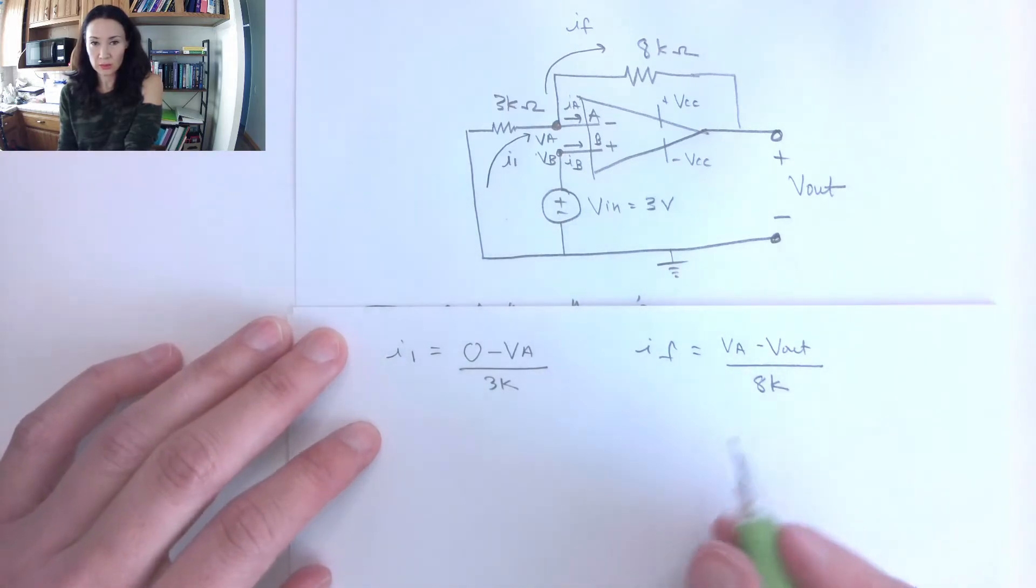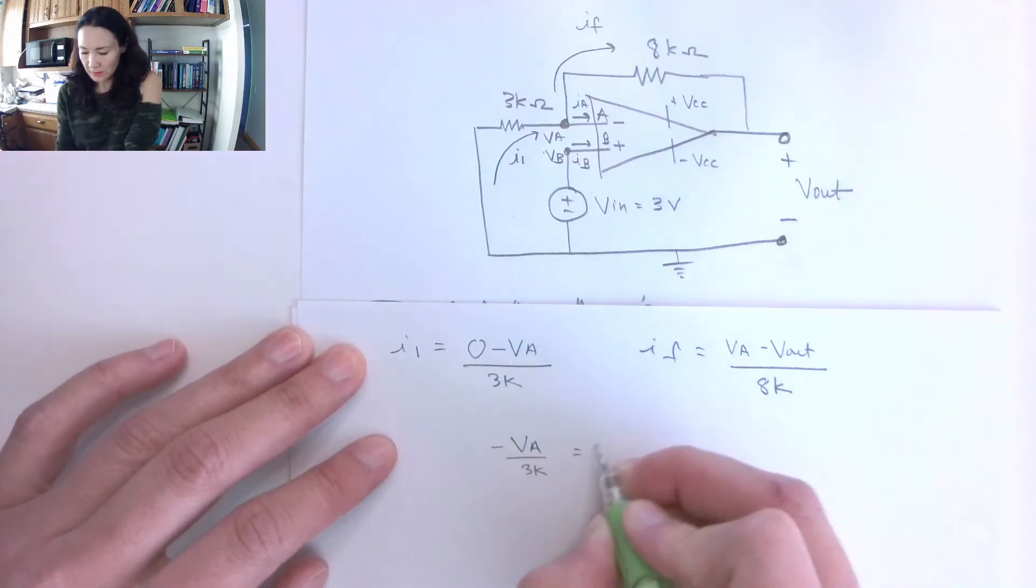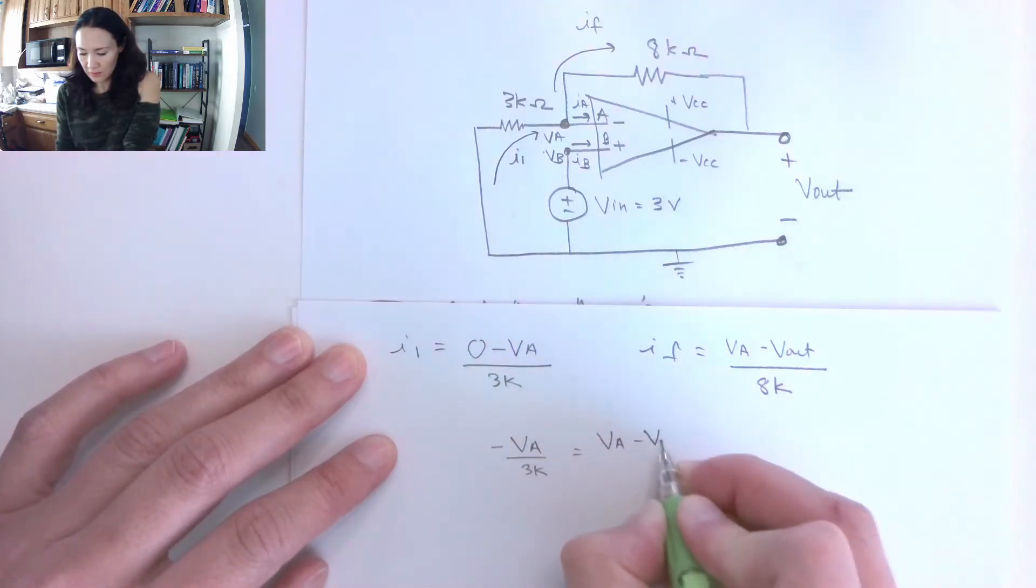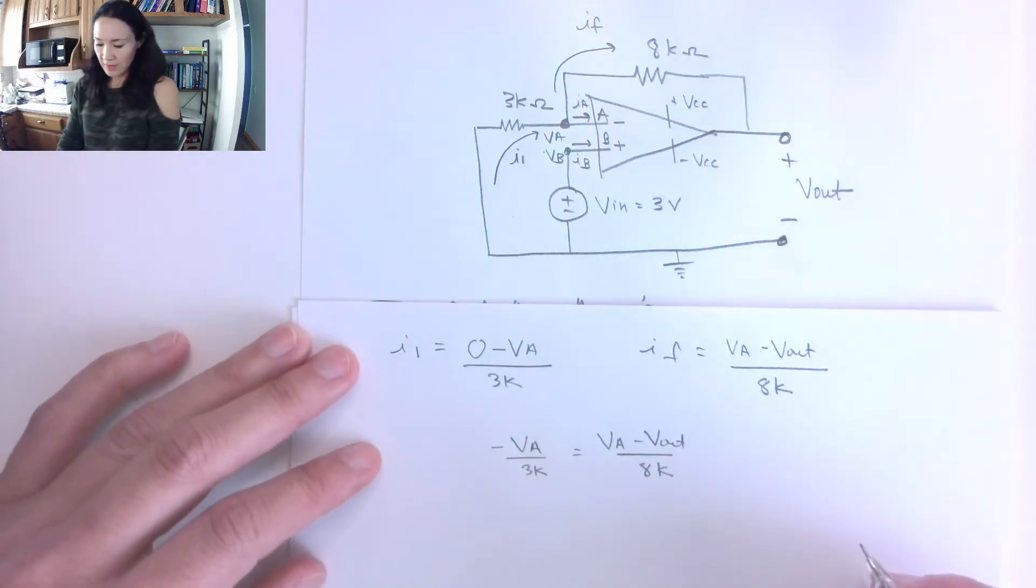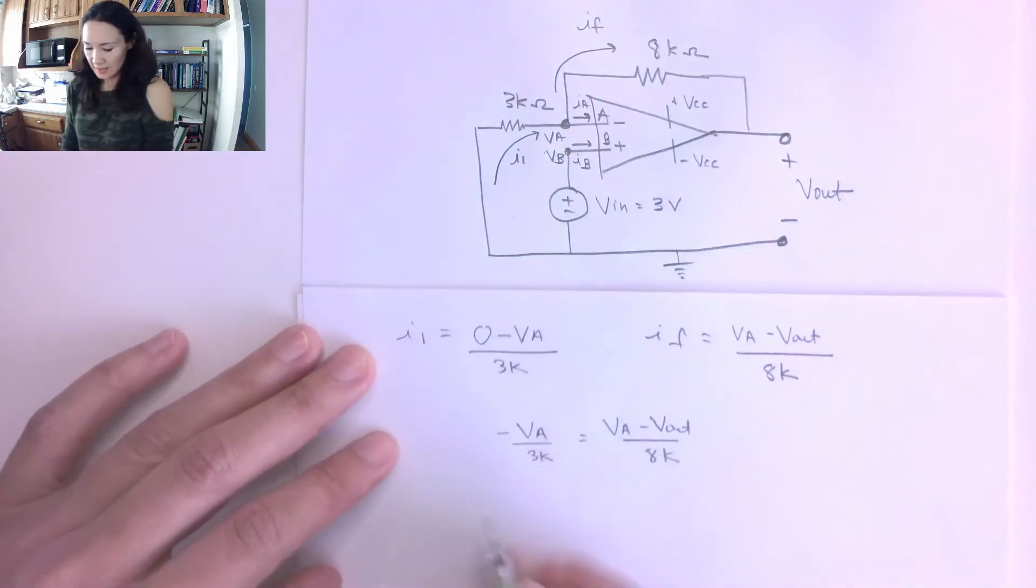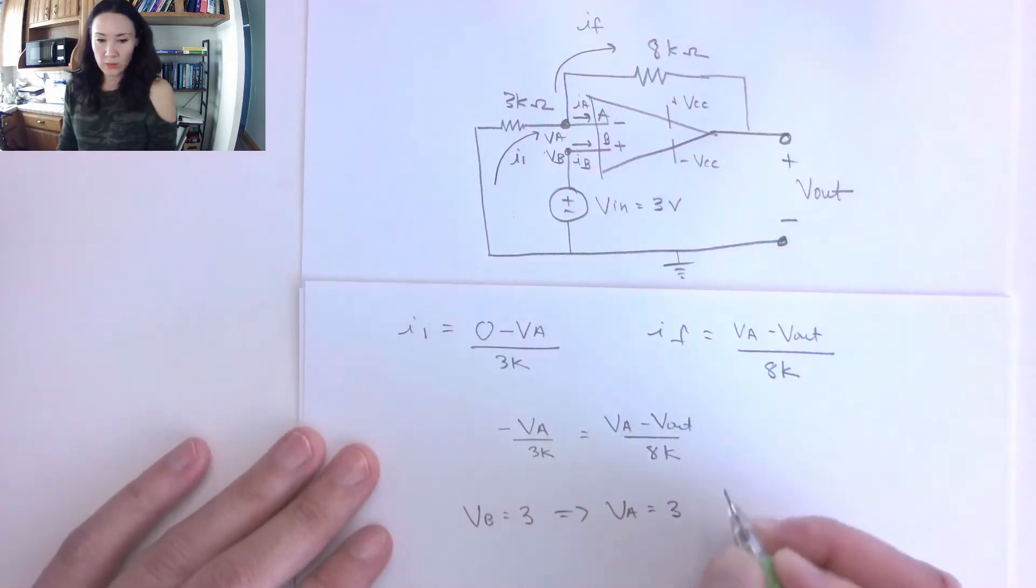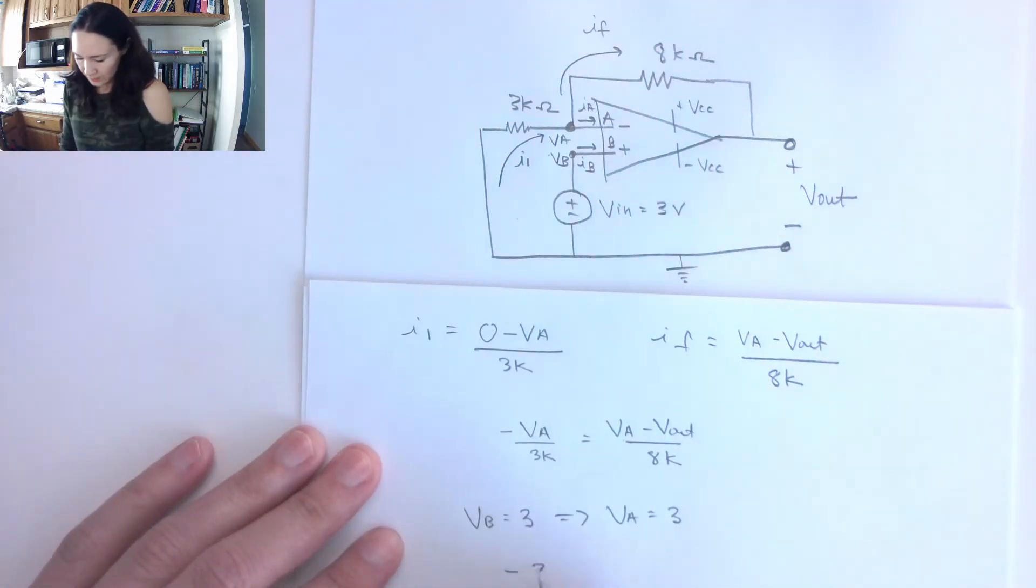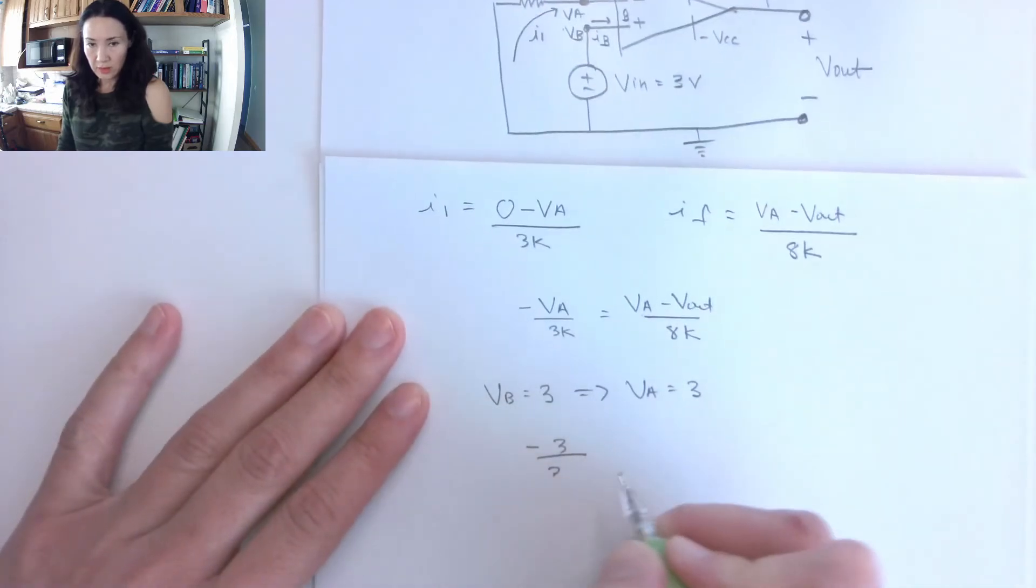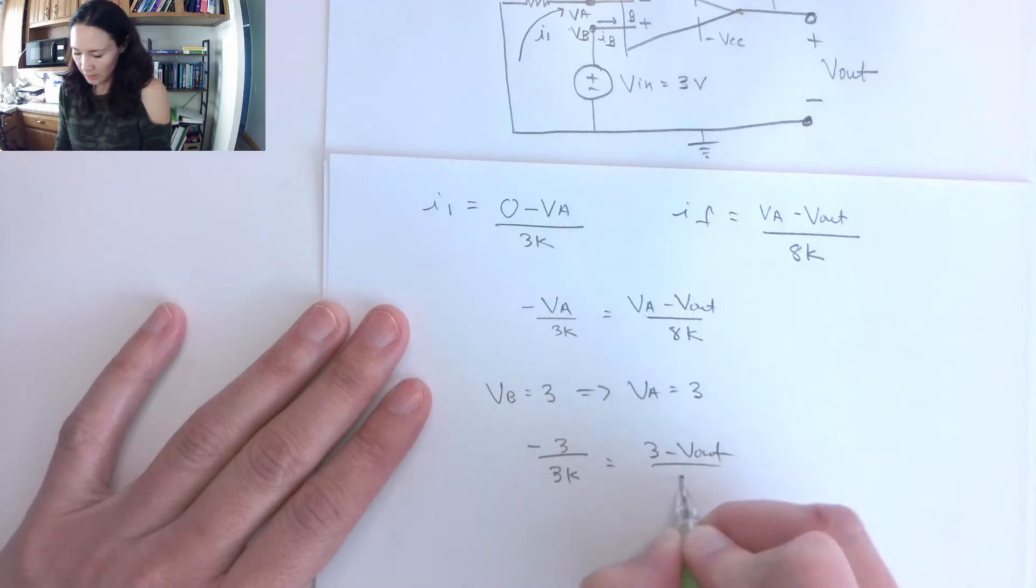So then we just established because this IA is zero that I1 is equal to IF. So I get to set these two equal to each other. So this gives me negative VA over 3K is equal to VA minus Vout over 8K. And then remember that we know already what VA is because since VB is equal to 3, that implies that VA is also equal to 3. So we can replace this VA with 3.